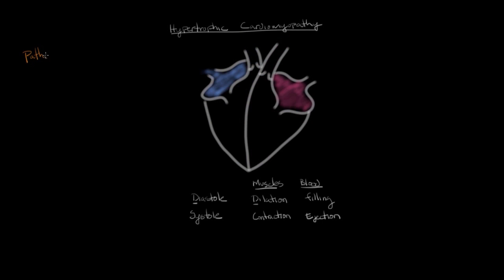Now that we've reviewed normal cardiac physiology, let's talk about the pathogenesis of hypertrophic cardiomyopathy. Cardiomyopathy is a disease of the heart muscle: 'pathy' meaning disease, 'cardio' meaning heart, and 'myo' meaning muscle. So the first step in the pathogenesis of hypertrophic cardiomyopathy is a problem with the heart muscle.